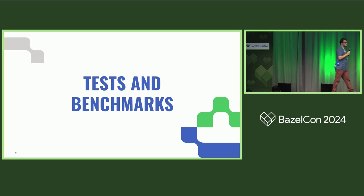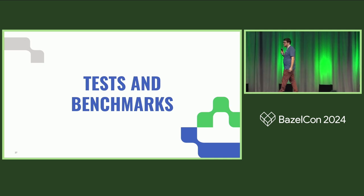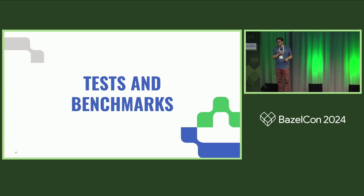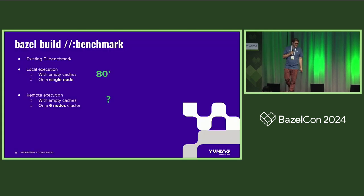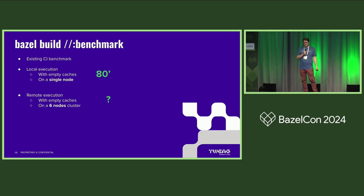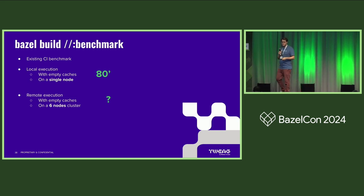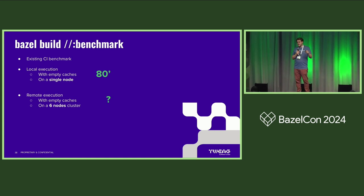Now for the results. We have one CI task that's doing benchmarking. It takes 80 minutes — one hour and 20 minutes — when you do not reuse any of the Bazel action cache, so all actions need to run again. That's on a single node. So I did the same thing with my six-node cluster — the same machines, so basically six times more computing power.